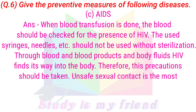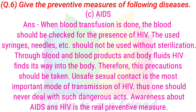C. AIDS. Answer: When blood transfusion is done, the blood should be checked for the presence of HIV. Used syringes, needles, etc. should not be used without sterilization, as through blood, blood products, and body fluids, HIV finds its way into the body. Therefore, these precautions should be taken. Unsafe sexual contact is the most important mode of transmission of HIV; one should never engage in such dangerous acts. Awareness about AIDS and HIV is the most important preventive measure.